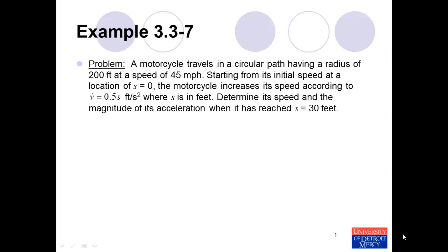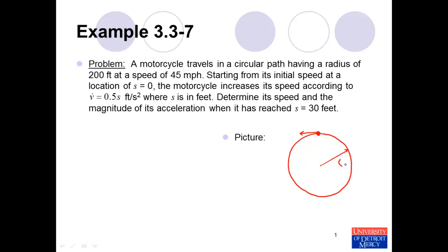The first step in solving any problem is to read the problem statement, maybe multiple times, in order to really understand what's happening. It may be helpful to draw a picture to help in this process. In this case, we know that the motorcycle travels in a circular path. I'll mark the motorcycle as being just a particle moving around the circle. We're told that the circle has a radius of 200 feet — I'll use the variable rho to indicate radius.